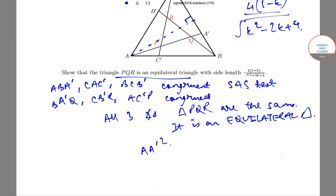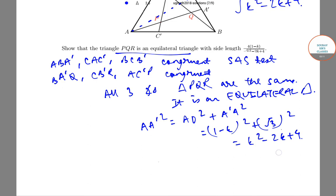AA'² equals AO² plus OA'². That is, (1-k)² plus (√3)², which equals k²-2k+4.